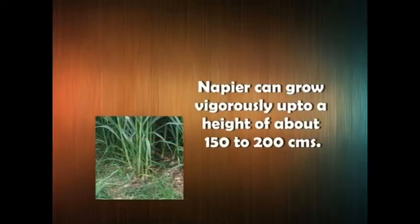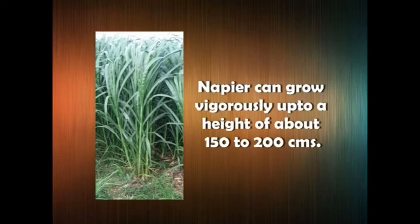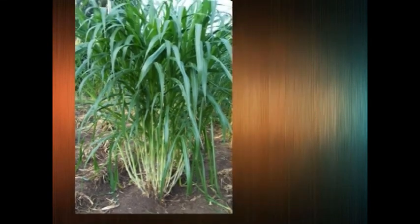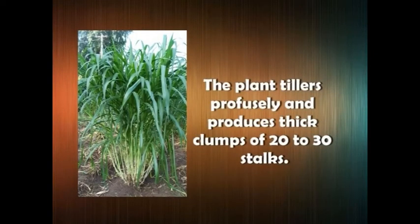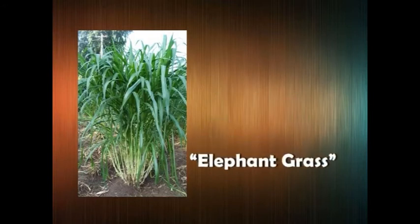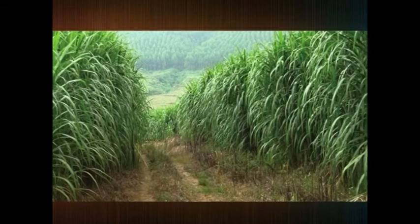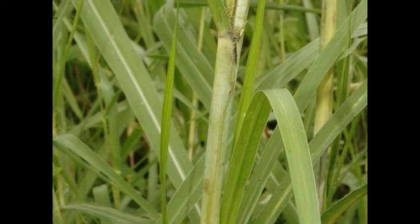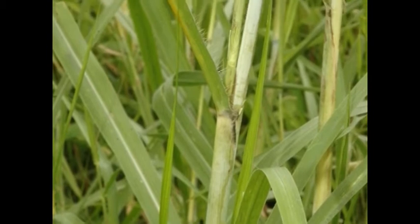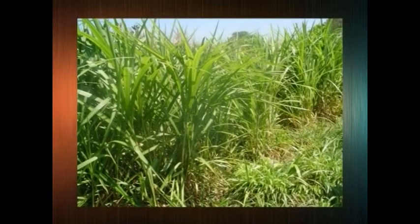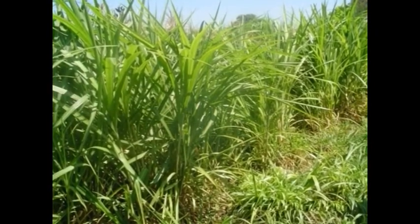We will discuss about the botanical description of the grass. Napier can grow vigorously up to a height of about 150 to 200 cm. The plant tillers profusely and produces thick clumps of 20 to 30 stalks. It resembles sugarcane in growth habit, but leaves are narrower and stems are taller. The lower part of the stem is usually smooth, but the portion near the top is usually hairy. The leaves are dull green and very long, growing to about 90 cm.